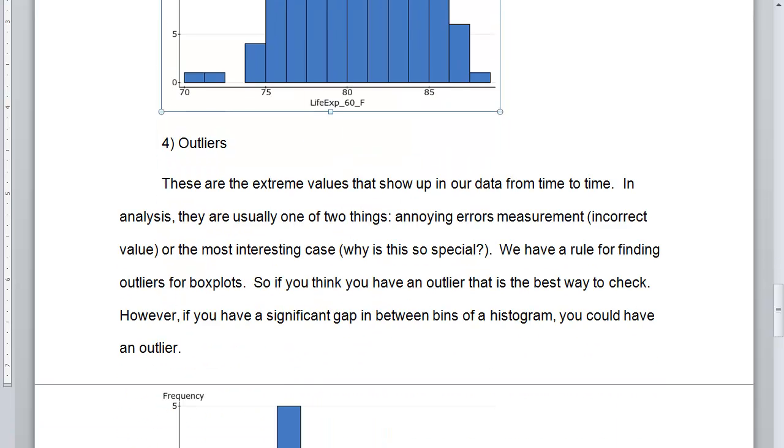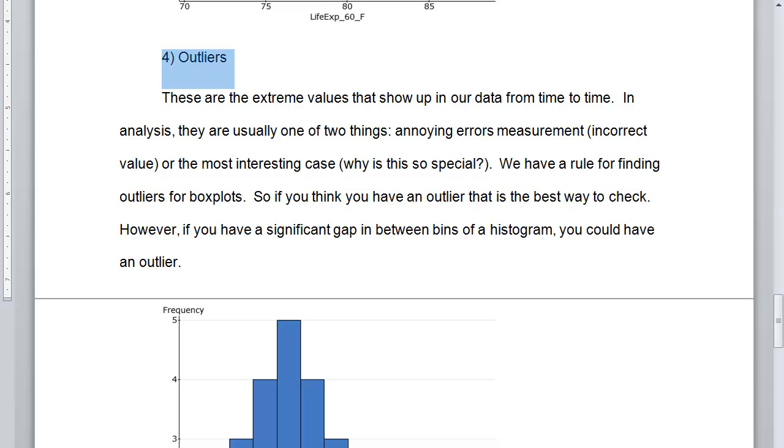And then four, outliers. The last thing that you should consider are outliers. These are extreme values that show up in our data from time to time. Some data more commonly than others. In analysis, they are usually one of two things.